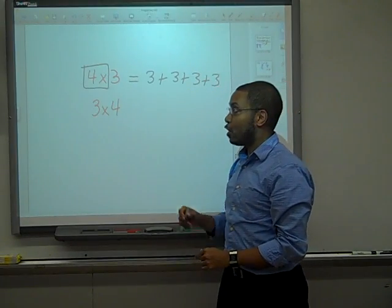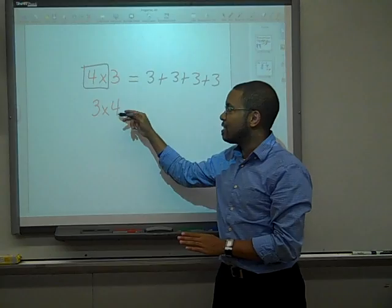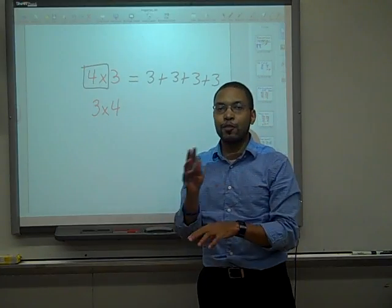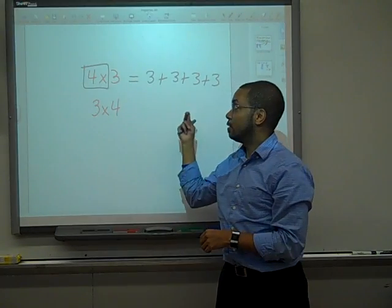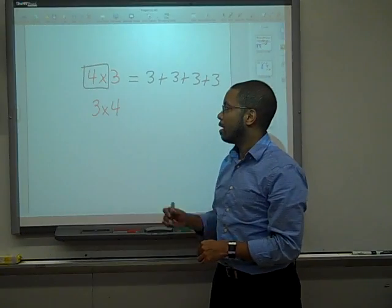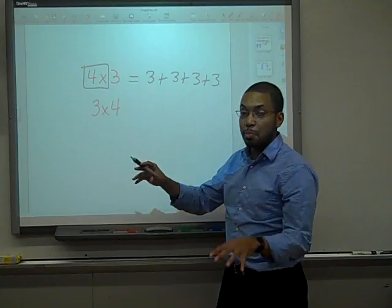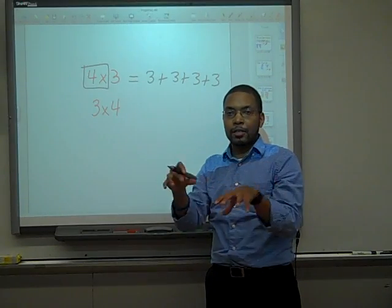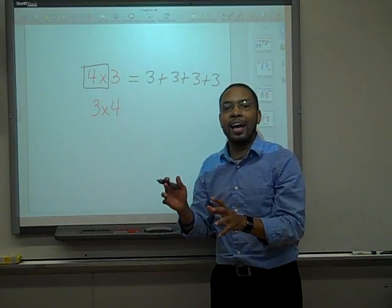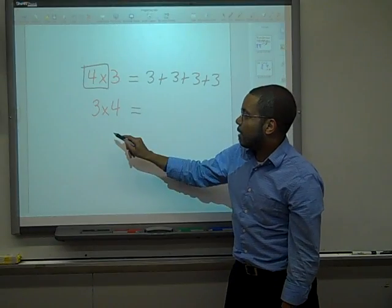Now, you're going to get the same answer, but 3 times 4 has a slightly different meaning than 4 times 3. And you'll get the same answer because of a property that we call the commutative property. It just means that you're changing the order of the factors and you're not changing the result at all.